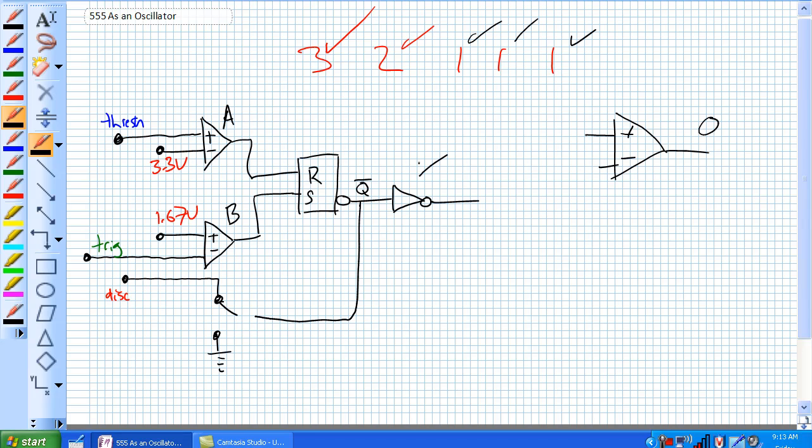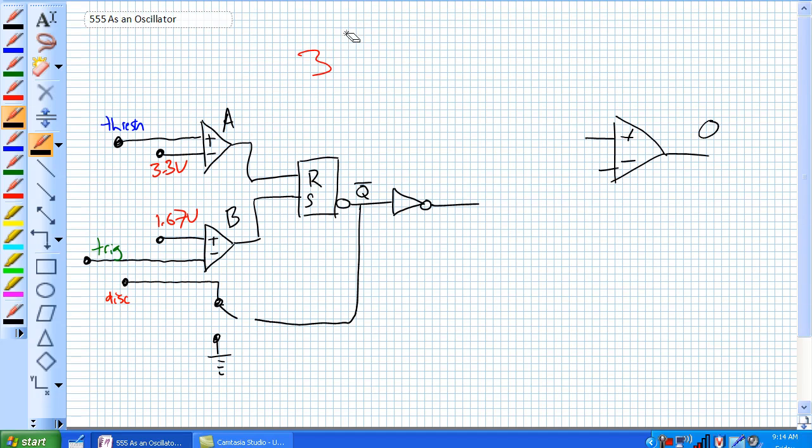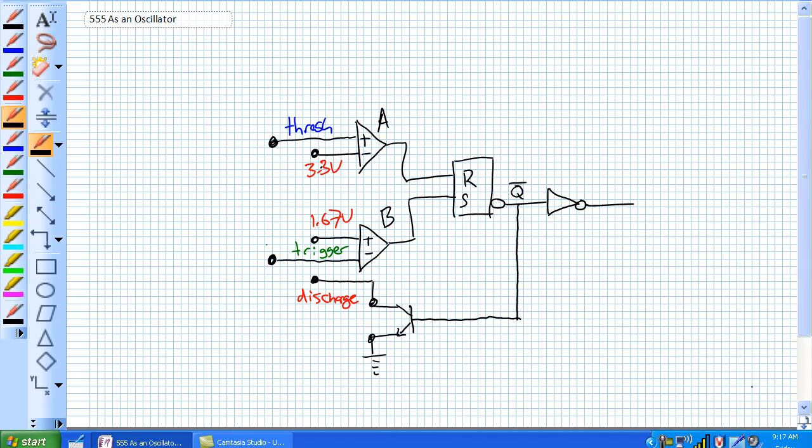So that's our transistor. And then last one is our inverting buffer. Because not Q is being fed into it, we want Q on the output. So setting up the 555 timer as an oscillator is a little different than when we set it up as the astable multivibrator. We're going to show you how to do that along with some formulas to determine the duty cycle and the pulse width.